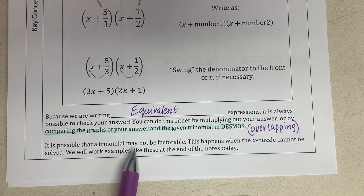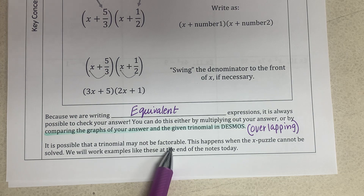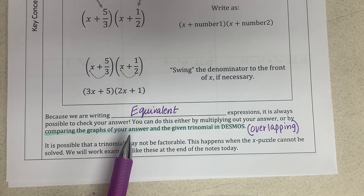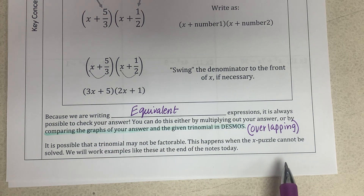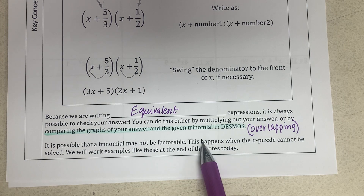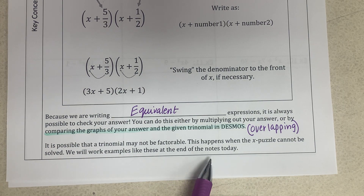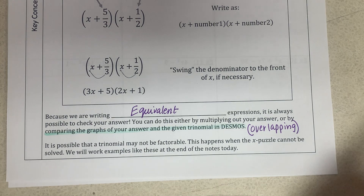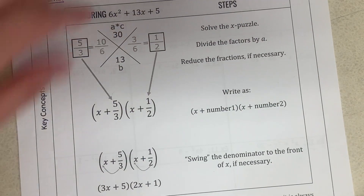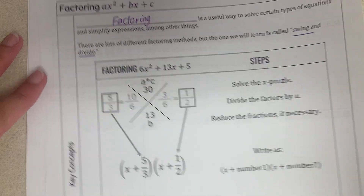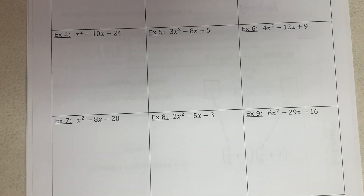It is possible that a trinomial may not be factorable, so you might not find any factors. You will know when you go to solve the X puzzle and it cannot be solved. We are going to look at those examples as well by the end of the notes. The process is pretty easy and kind of fun — it's not that technical.